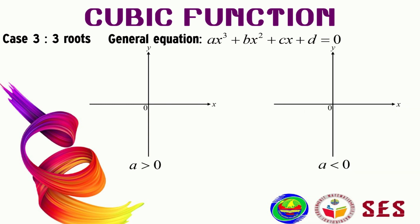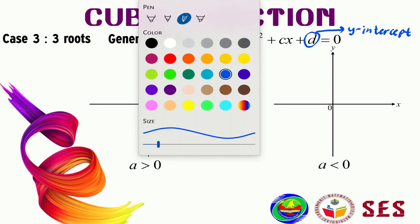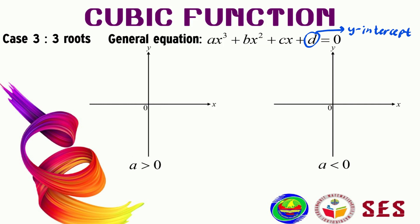The general equation for a cubic function is ax³ + bx² + cx + d = 0. The 'd' here still represents the y-intercept. For Case 3, we have two basic shapes: the first is when 'a' is positive, and the next is when 'a' is negative.